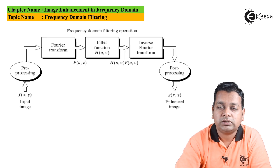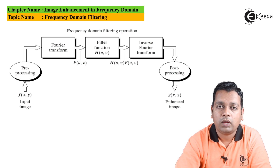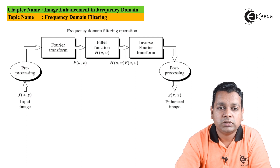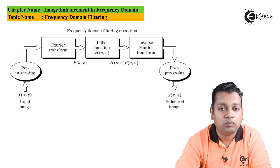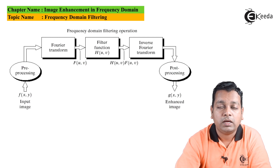These steps we have just discussed can be recalled with the help of a block diagram. Starting from the left side, we have f(x,y) representing the input image. Before going to have the filtering operation in the frequency domain, we may require certain pre-processing. After pre-processing, we can apply the Fourier transform to it. For f(x,y) represented in the spatial domain, after the Fourier transform we represent the image as F(u,v). Now we have the filter function H(u,v).